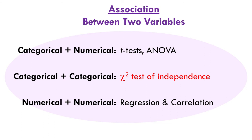Association between two variables can come in various forms. We've already done association between categorical and numerical variables when we did t-tests and ANOVA. When you do a t-test and you're testing whether the mean of one group is significantly different from the mean of another group, you're testing an association between the numerical variable and the categorical variable that divides the groups. A t-test and ANOVA both test the association. Mathematically, these are in the same family.